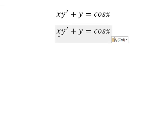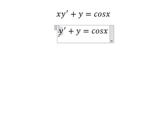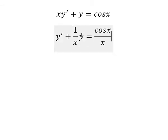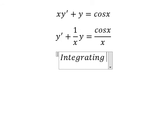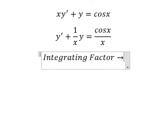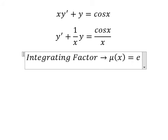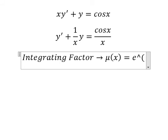We divide both sides by x. So we have the original function and the first derivative of the function. We can use the integrating factor. So we have mu(x) equals e to the power of the integral.